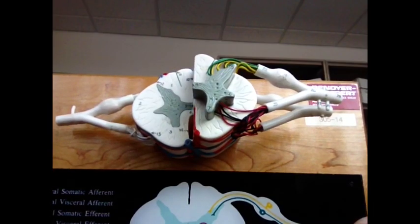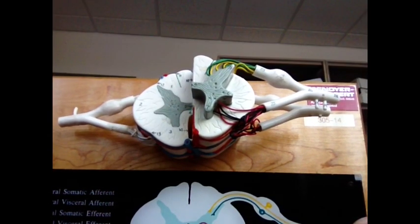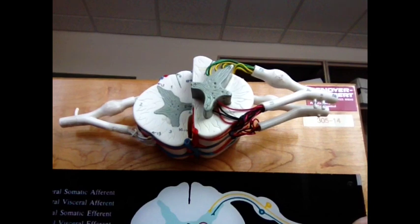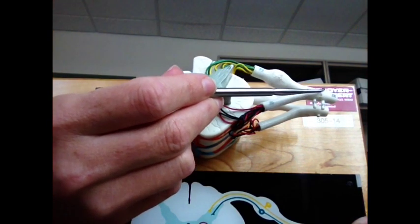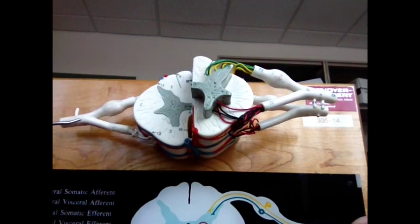This is a review of the spinal cord cross-section model for AMP1. Here is the spinal nerve on either side of the spinal cord, and it's attached to the spinal cord by two roots.